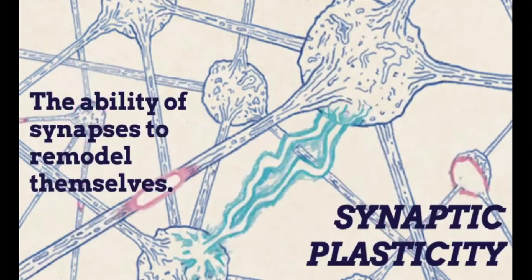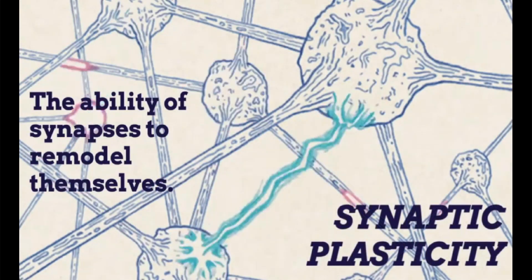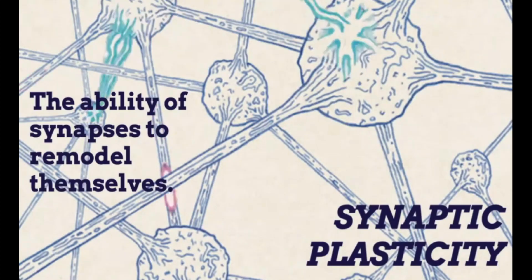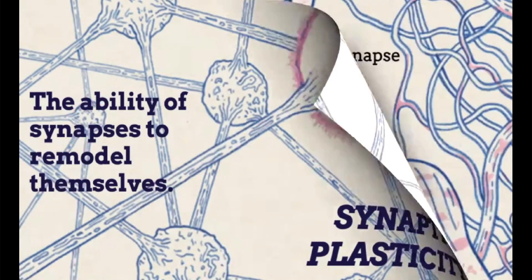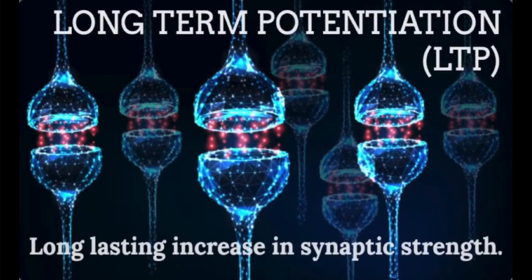These synapses have the ability to remodel themselves, which is called synaptic plasticity. Encoding a new memory involves many changes in the number and shapes of synapses and the amount of the neurotransmitter glutamate that is released. Increasing the long-term potentiation, or LTP, of synapses by taking breaks can help improve our memory.